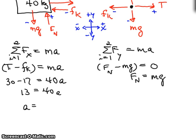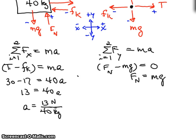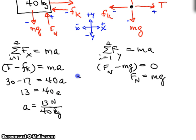And then a equals 13 divided by 40. That would be 13 newtons divided by 40 kilograms, which is 13 divided by 40, is 0.325. So the acceleration is going to equal 0.325 newtons per kilogram. We recall that's equivalent to 0.325 meters per second squared. So we found the answer to part A.